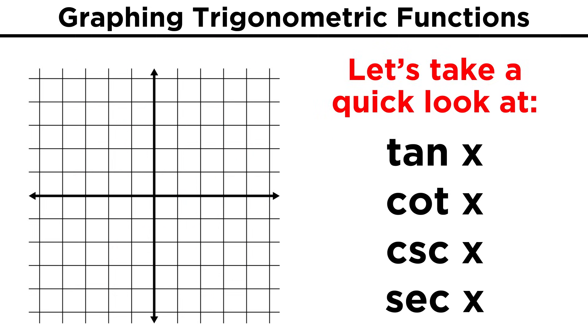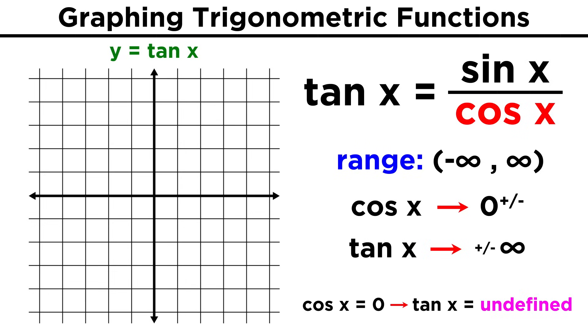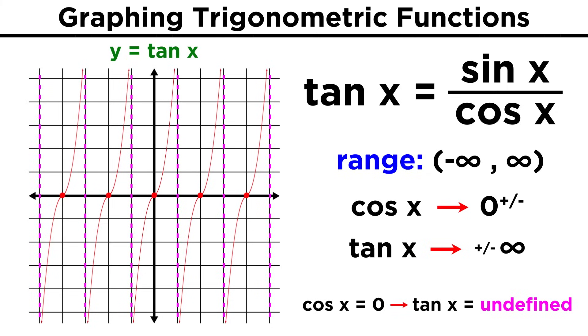Before we move on from this subject, let's just quickly look at the graphs of the other trig functions, so that we know what they look like. Tangent looks quite a bit different, because the range is no longer negative one to one, like for sine and cosine. Instead this function approaches positive and negative infinity as cosine values approach zero, and when cosine is zero, tangent is undefined, so we have a series of vertical asymptotes.